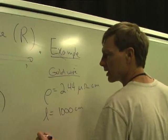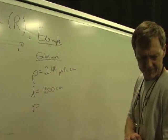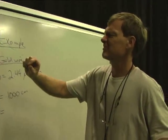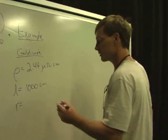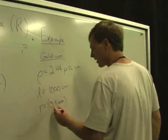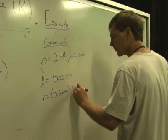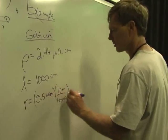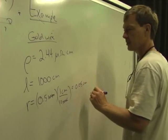And the area, let's see the radius. Let's say the radius is a half a millimeter. That's a pretty thin wire. That's about right for a wire, so it's a half a millimeter. I want that in centimeters, so there's one centimeter for every 10 millimeters, so it's going to be 0.05 centimeters.